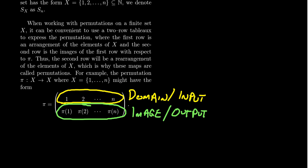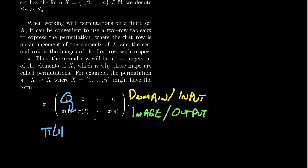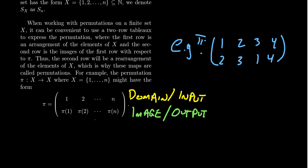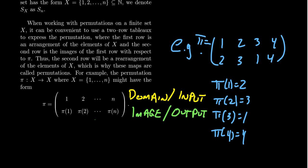You read this off like a table. For example, pi of 1: you find the column for 1 and look at the number below. For pi of 2, you find 2 and look at the number below. As an example in S4, we might have the tableau with top row 1, 2, 3, 4 and bottom row 2, 3, 1, 4. This tells us pi(1)=2, pi(2)=3, pi(3)=1, and pi(4)=4. It's possible that an element maps to itself — that's perfectly acceptable.